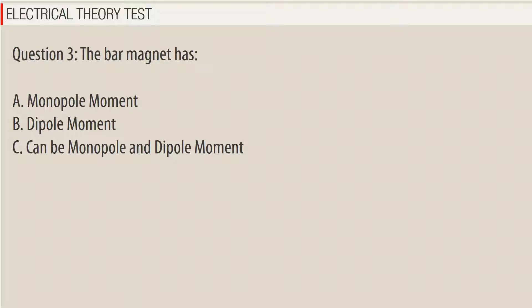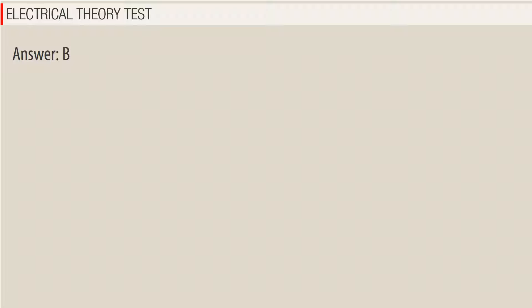Question 3. The bar magnet has? a. Monopole moment. b. Dipole moment. c. Can be monopole and dipole moment. Answer: B.